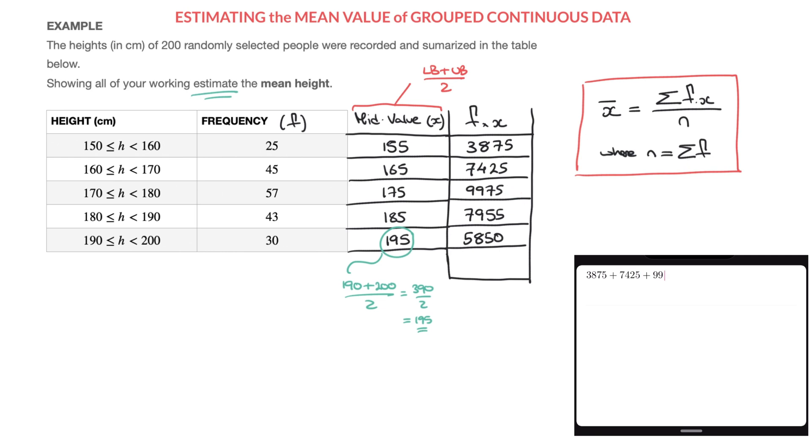Plus 7955, so that's 7955, plus the last value we have there, 5850. Done.